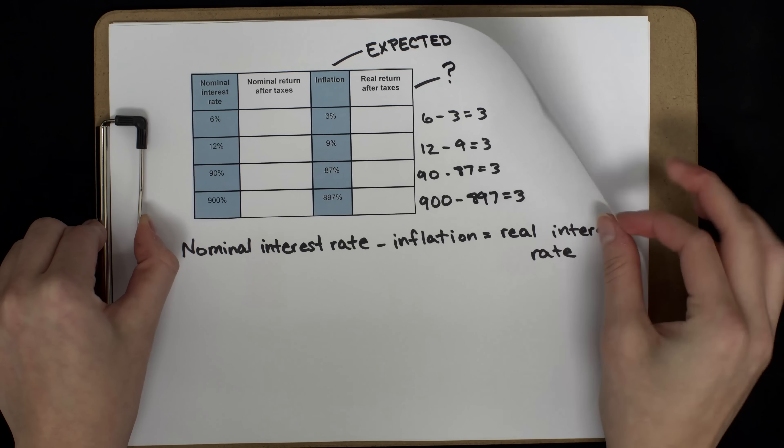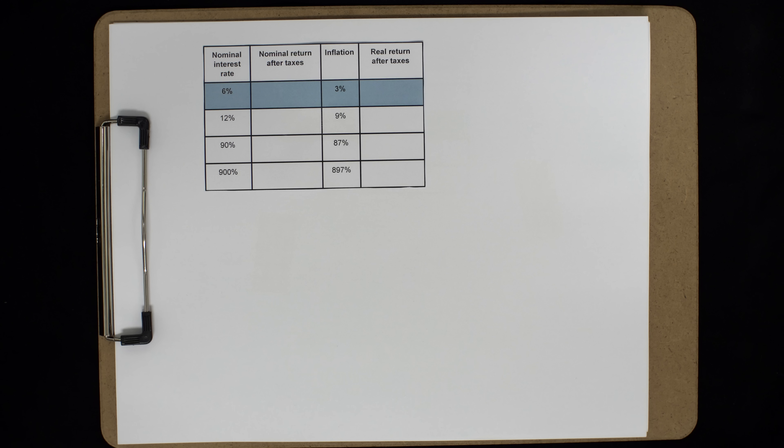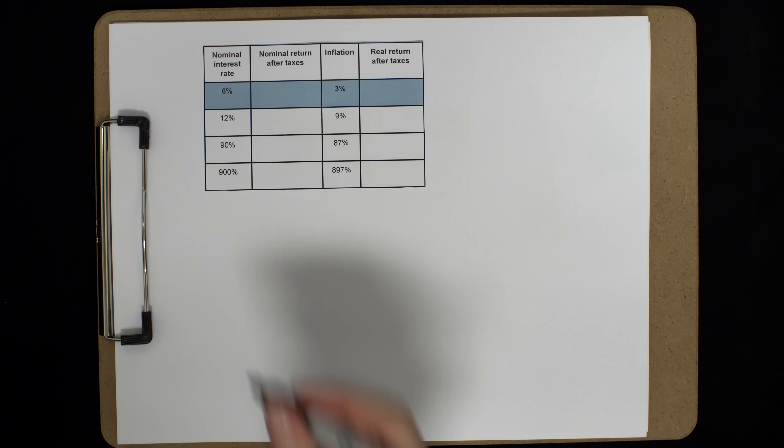So let's tackle that first case. Your savings account offers a nominal interest rate of 6%, and inflation is 3% that year. Fairly low. To make this more concrete, let's assume you saved $100.